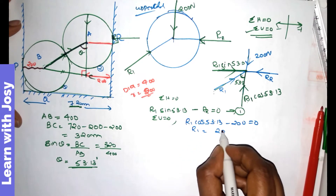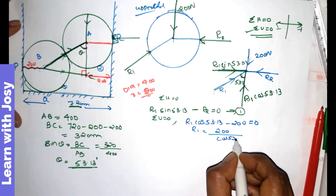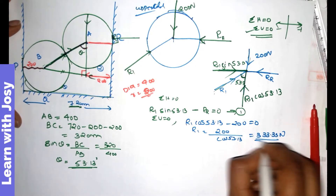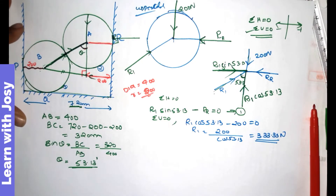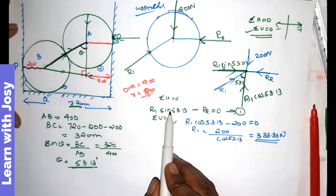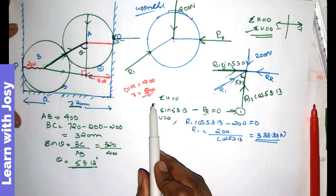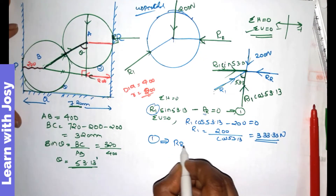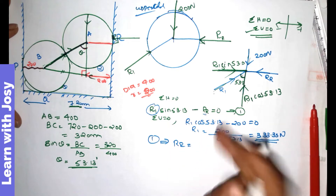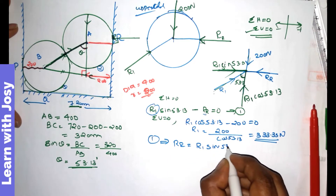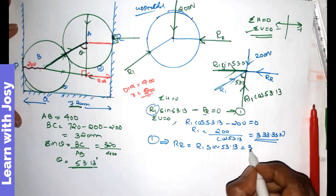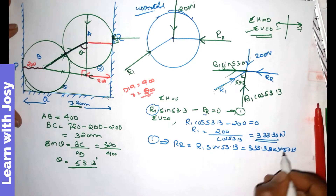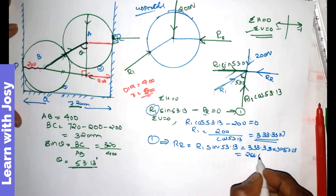R1 equals 200 divided by cos 53.13. Then substituting back, RR equals R1 sin 53.13. R1 equals 333.33 N, so RR equals 333.33 into sin 53.13, giving RR equals 266.67 N.